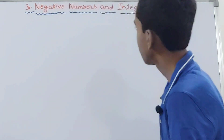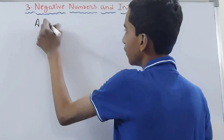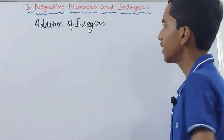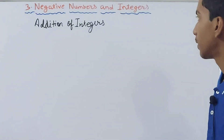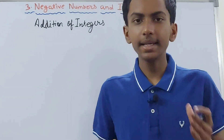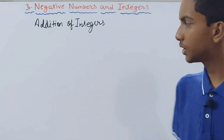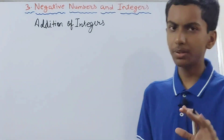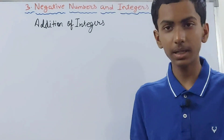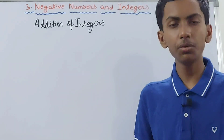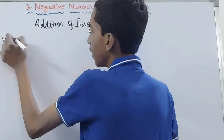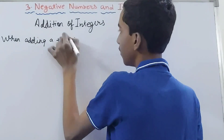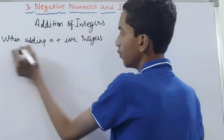Now let's move on to addition of integers. Adding integers is a little different from adding whole numbers or natural numbers. In adding integers we have two cases: when you add a positive integer and when you add a negative integer. When adding a positive integer, we move to the right on the number line.